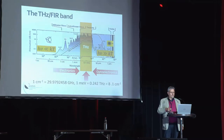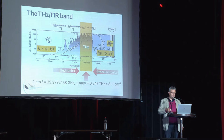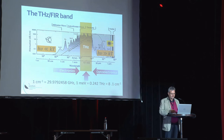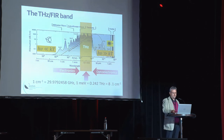As already mentioned, the Terahertz far-infrared band sits between electronics and optoelectronics. In electronics, photon energy is very low compared to kT, while in the visible and near-infrared range it is the contrary. I will mainly use Terahertz units, but for those from another community, here is the conversion in meV or inverse centimeter.